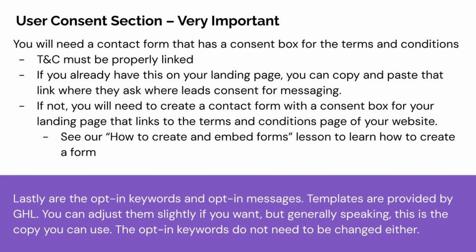The next step is the user consent section, which is very important. For this step, you will need a contact form that has a checkbox for the terms and conditions, which should be properly linked so the contact may visit that page. If you already have this on your landing page, you can copy and paste that link into the first box that asks how the user consents. If not, you will need to create a contact form with a consent box for your landing page that links to the terms and conditions page of your website. Now are the opt-in keywords and opt-in message, and templates are provided from High Level. You can adjust these slightly if you want, but generally speaking, this is the copy you can use.